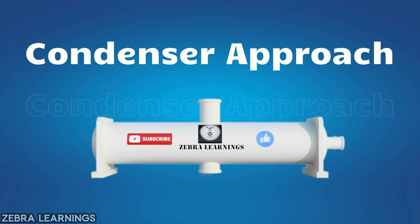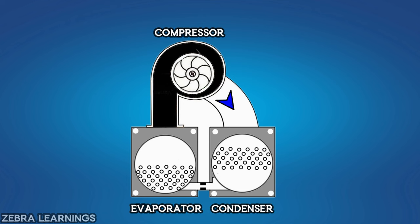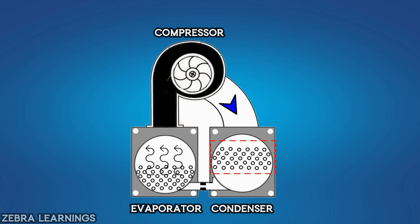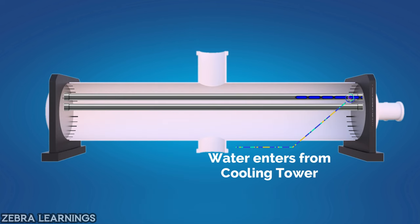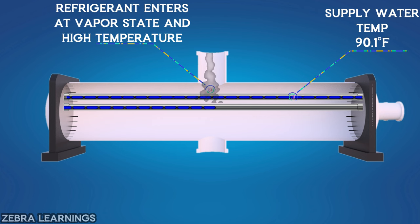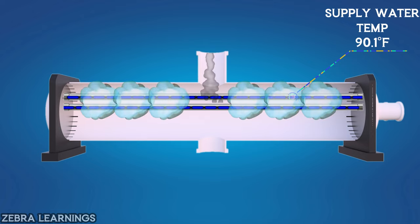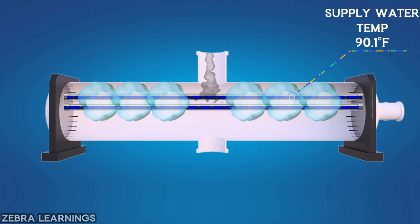Now let's find the approach value in the condenser. Once the heat from the water in the evaporator is transferred to the refrigerant, the refrigerant evaporates and enters the condenser in vapor phase through the compressor. In the evaporator, the coils are located at the bottom, whereas in the condenser, the coils are at the top. Water from the cooling tower enters this coil at 90.1 degrees Fahrenheit. The refrigerant enters the condenser in a vapor state at high temperature and must be cooled and converted back into a liquid. If the refrigerant is not properly cooled, it will remain in a vapor state in the condenser.